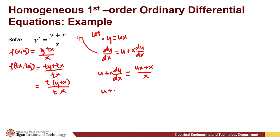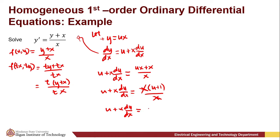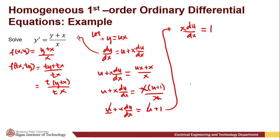So we have u + x · du/dx = u + 1. Transferring u to the right-hand side, we get x · du/dx = 1, since the u terms cancel. Separating the variables, we have du = dx/x. Then we integrate both sides.